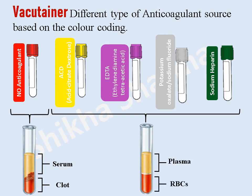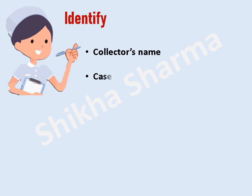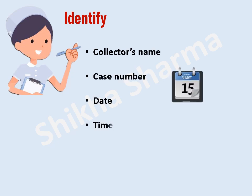On centrifugation of blood collected in plain vials, we will get a layer of serum above the blood clot. On the other hand, centrifugation of blood collected in any of the anticoagulant vials will give plasma. Identify each tube with the date, time, collector's name, case number, subject's name, location at which drawn, and evidence number.